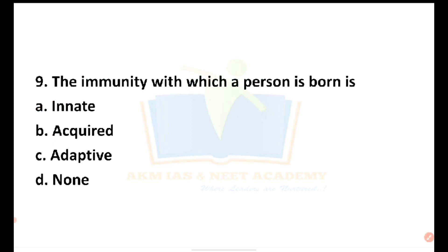The immunity with which a person is inborn — if a person is inborn with immunity, what type is it? The options are innate, acquired, adaptive. Acquired immunity is when we take a dose, such as a vaccine against coronavirus, and develop immunity. But when immunity is inborn, it is called innate immunity.